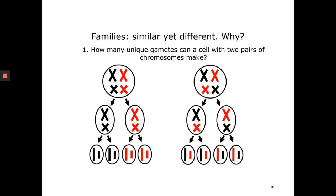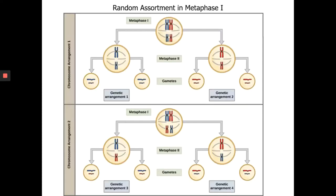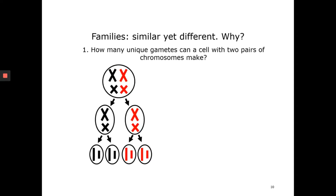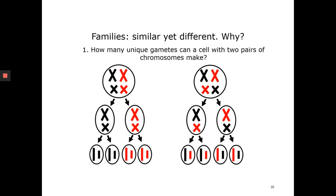I'm going to show you a picture. I have a slide titled 'Families: Similar and Yet Different.' You and your siblings are not exactly the same even though you come from the same parents — and I'm going to explain why, using random assortment.